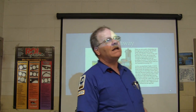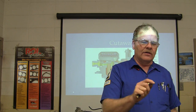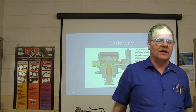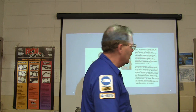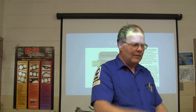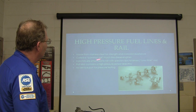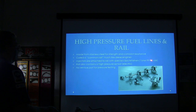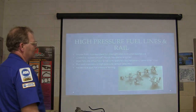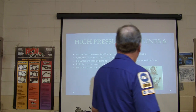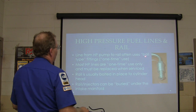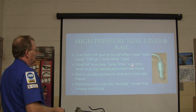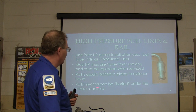There is no Schrader valve or pressure gauge port on the high-pressure side — it would be far too dangerous. You must rely entirely on the scan tool to read high-pressure fuel rail pressure. The high-pressure fuel lines and rail are made from stainless steel for strength and corrosion resistance. Like a diesel common rail, injectors are attached to the rail with special one-time-use clips and retainers. The rail has a high-pressure sensor.